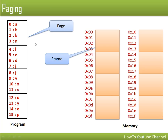Our program is divided into four pages, and each page has a size of four bytes. Similarly, the memory frames are also divided into blocks of four bytes each. A block in physical address space is known as a frame; a block in logical address space is known as a page. Our objective is to load the entire program into memory. We have eight frames and four pages, so these pages can be loaded into any available frame independently.